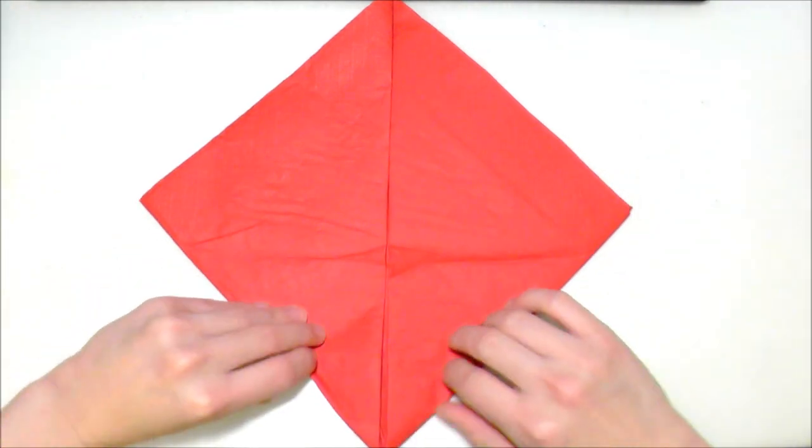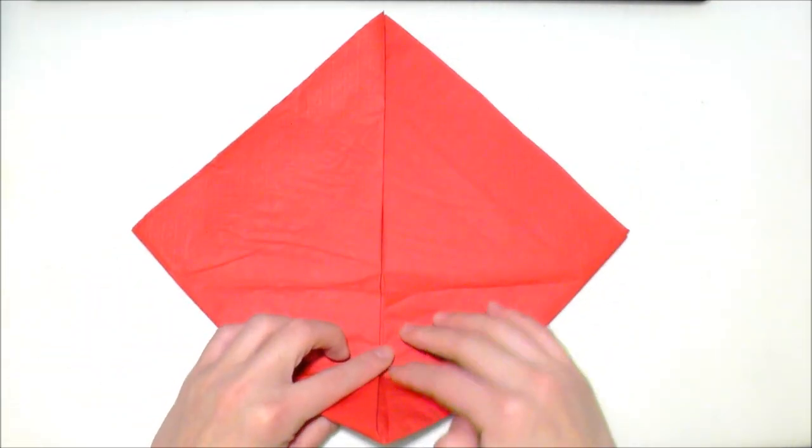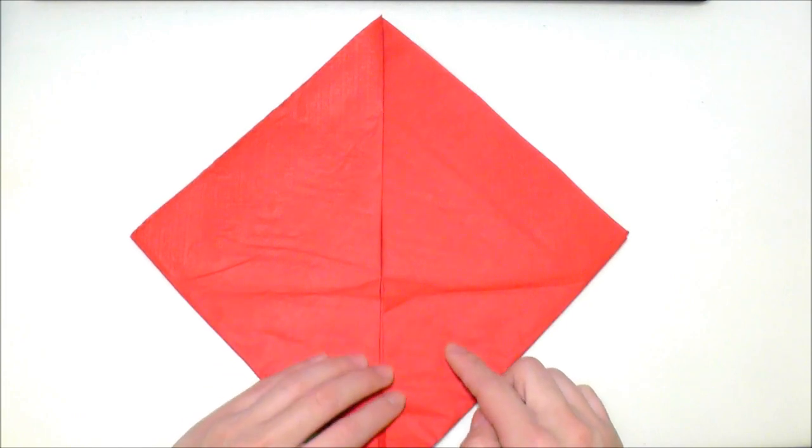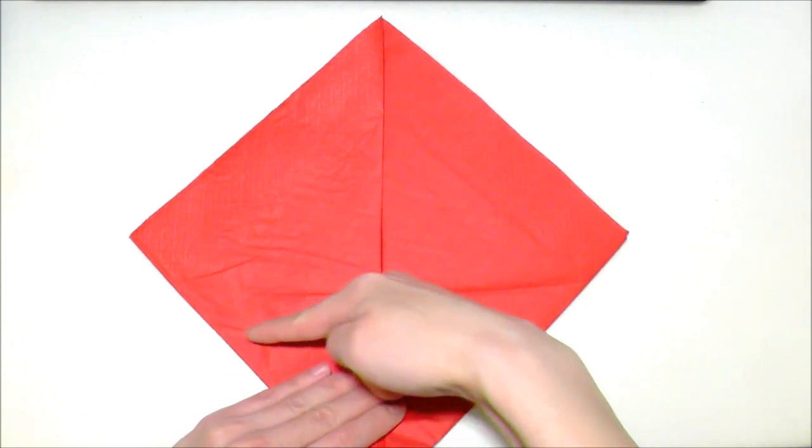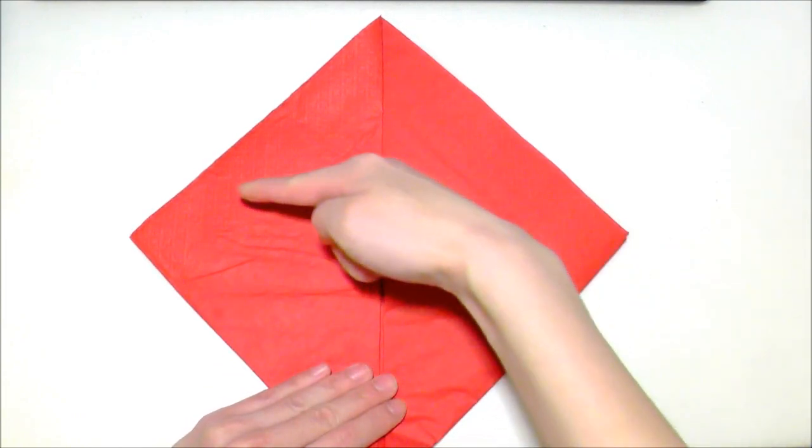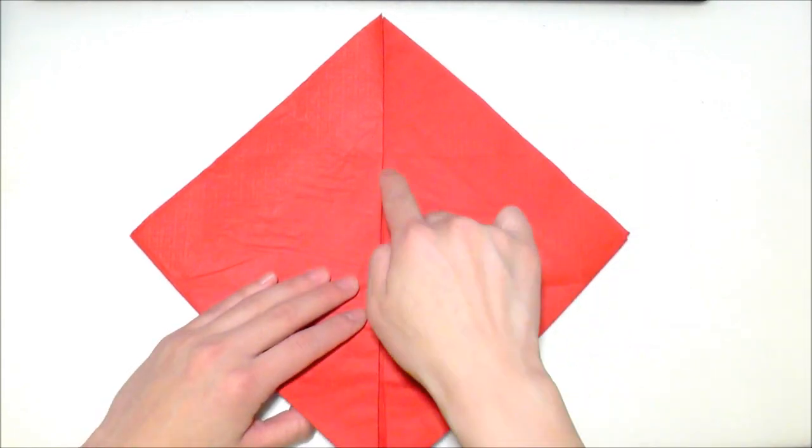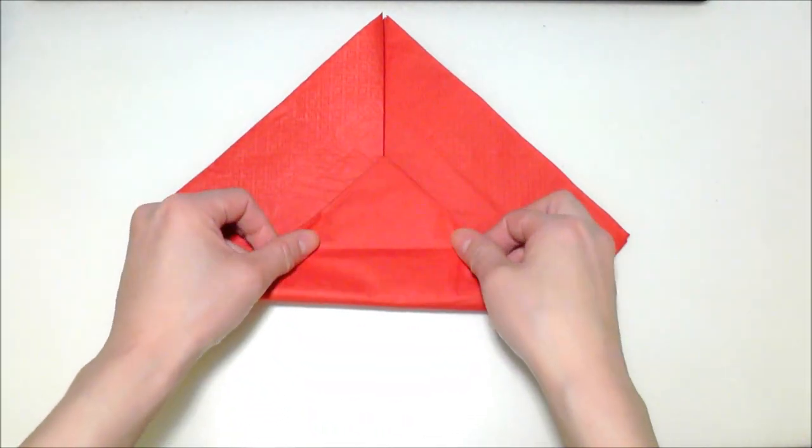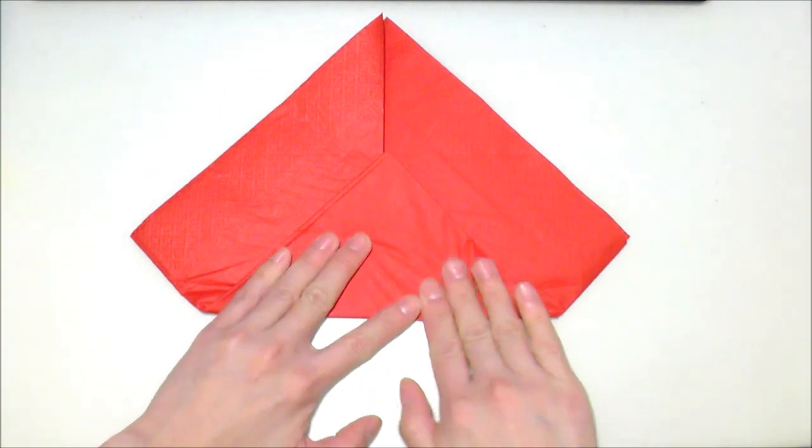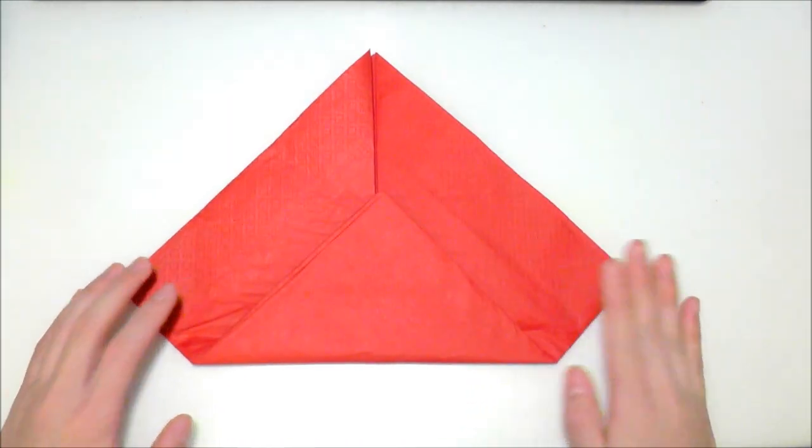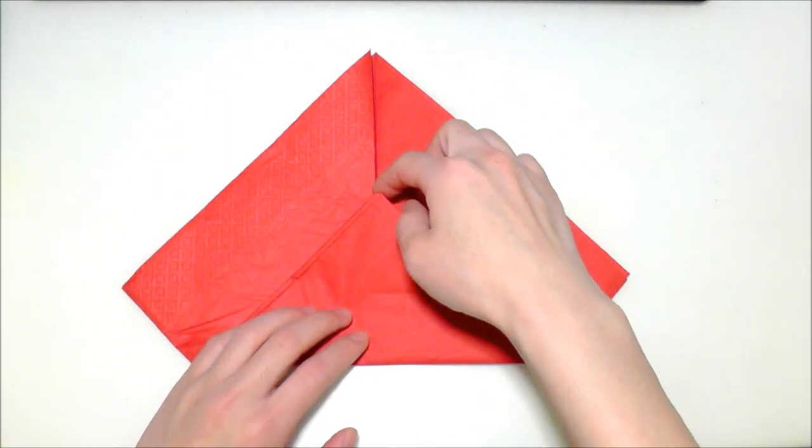After that, you're going to fold this bottom tip about two-thirds of the way up. Just imagine cutting it in thirds—this would be one-third and here would be two-thirds. Fold it up to the two-third mark, flatten it, and then fold this tip down so that it aligns with the very bottom line.